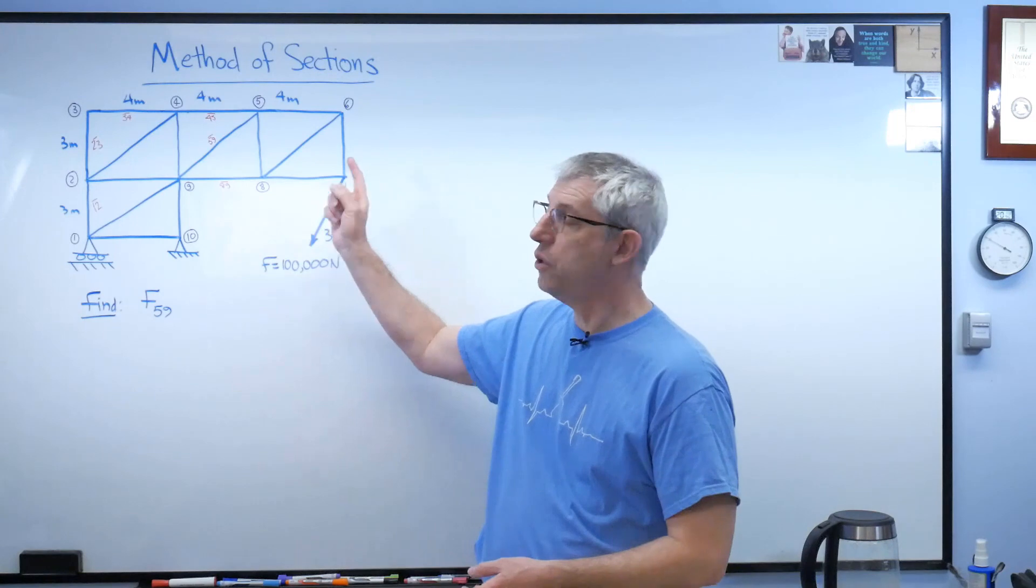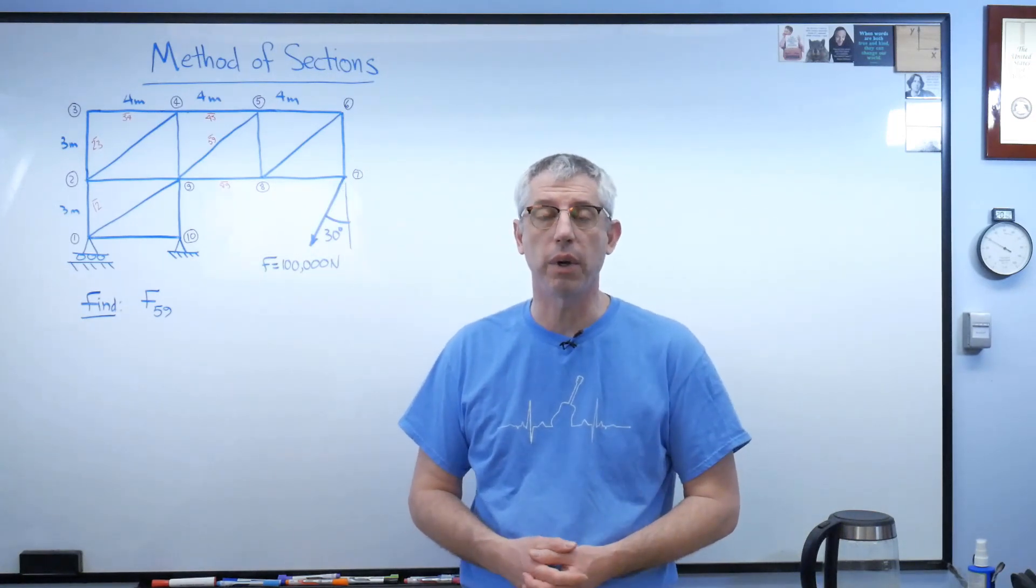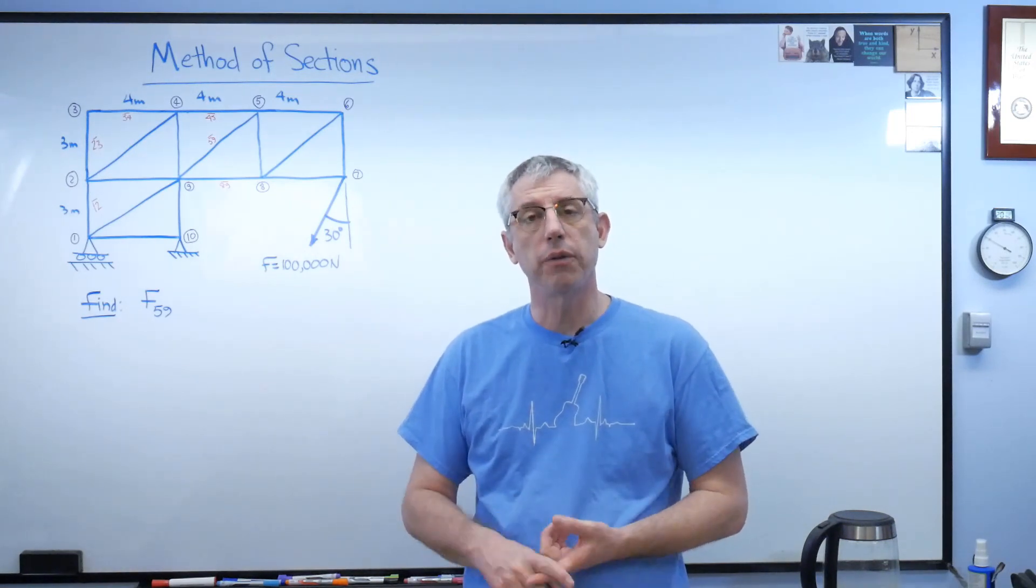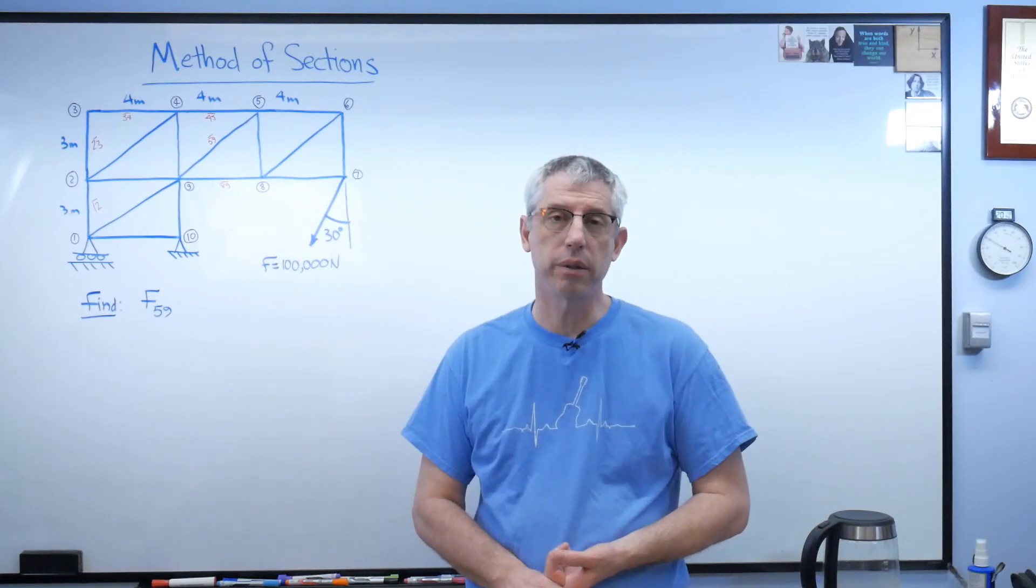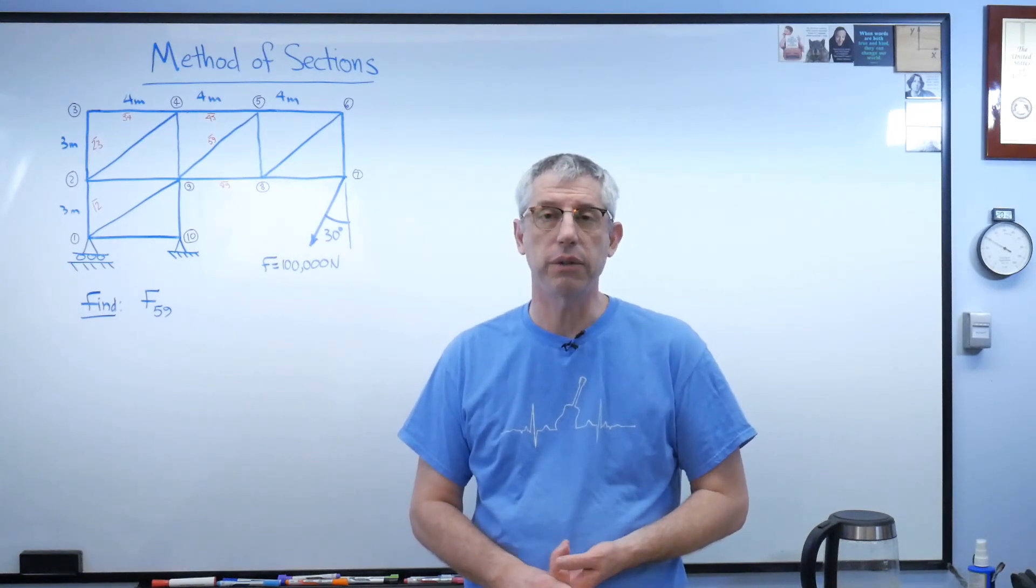What we've got here is a 2D pin-jointed truss. If you've taken a statics class before, maybe you're in one now, you might know that there's basically two ways to solve this problem. The first is called the method of joints, and the other one's called the method of sections.